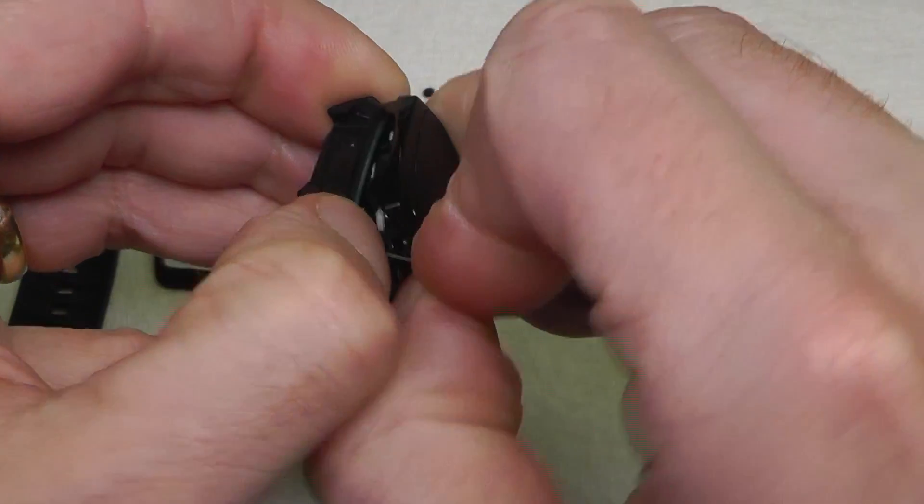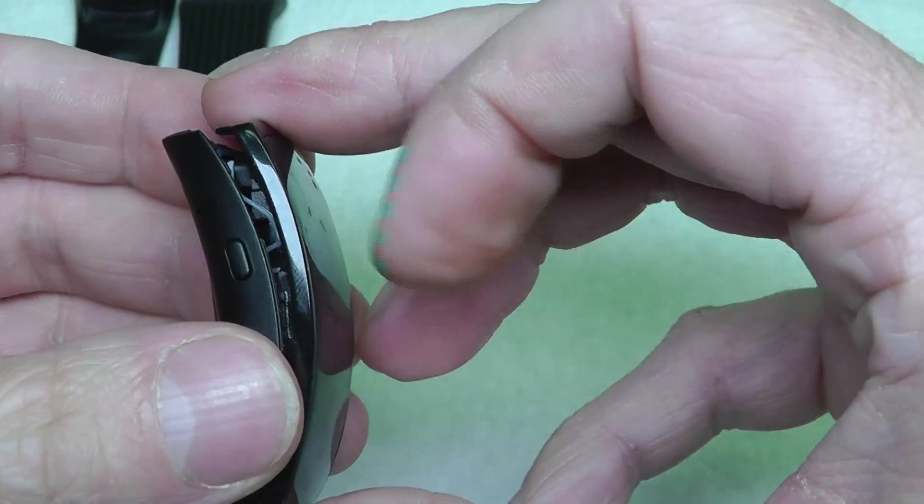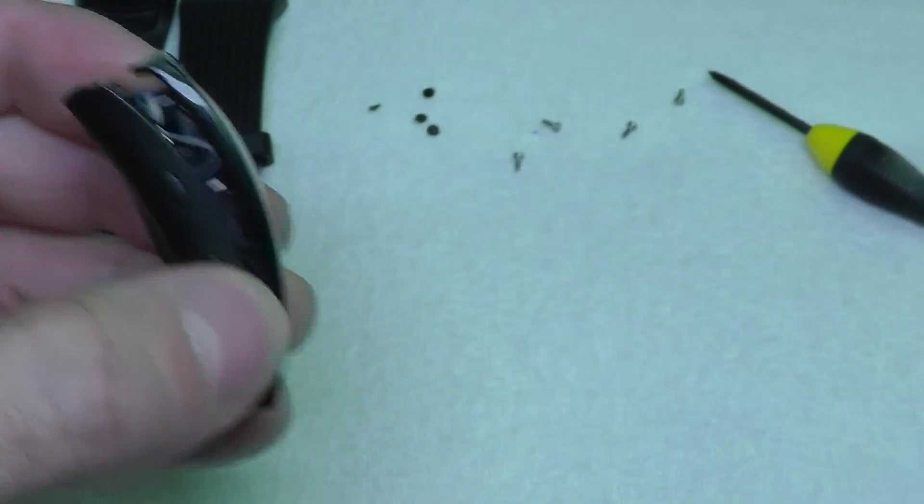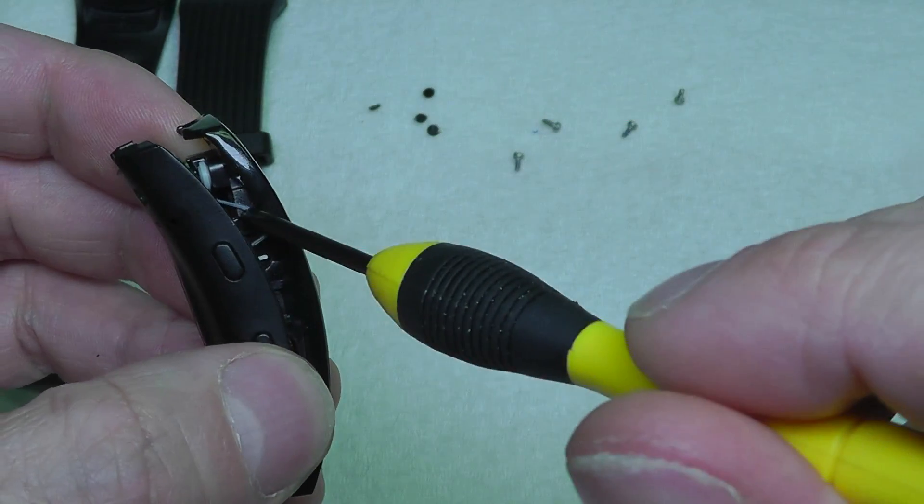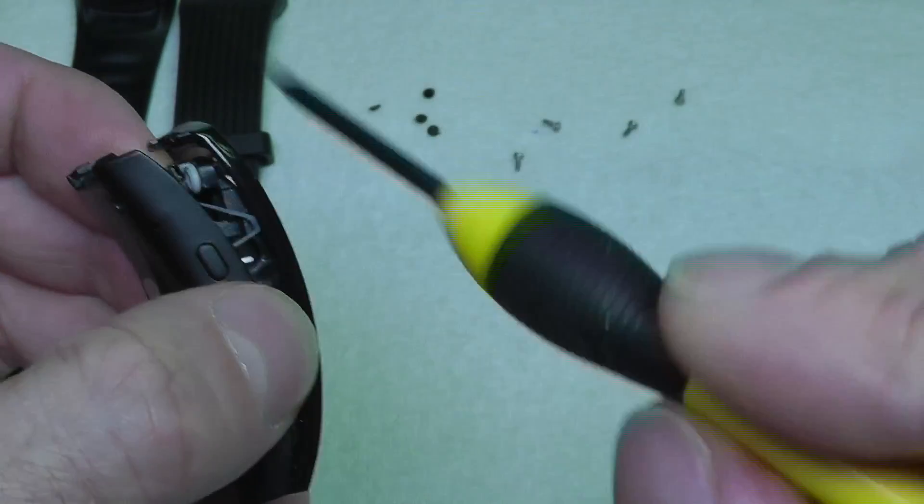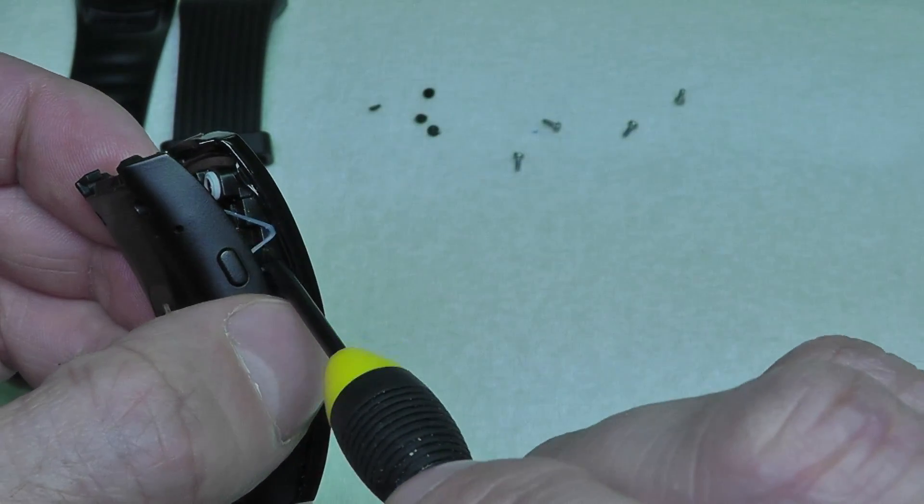Then you can pry open the body just using your fingernail. It's a little bit tricky, but then you can detach the bottom from the top. Just have to make sure not to tear the seal that's between those two parts.